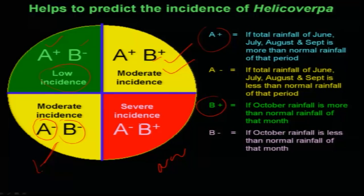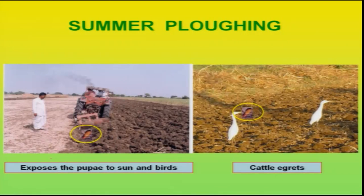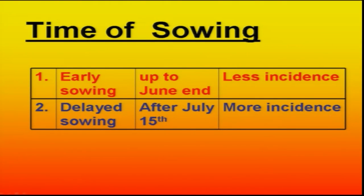This season, we had this particular situation. The IPM recommended involves 12 components in case of pigeon pea pest, starting from summer plowing. By doing this, we can expose some of the hibernating pupae to high temperature or to predation, whereby the carryover population can be reduced.